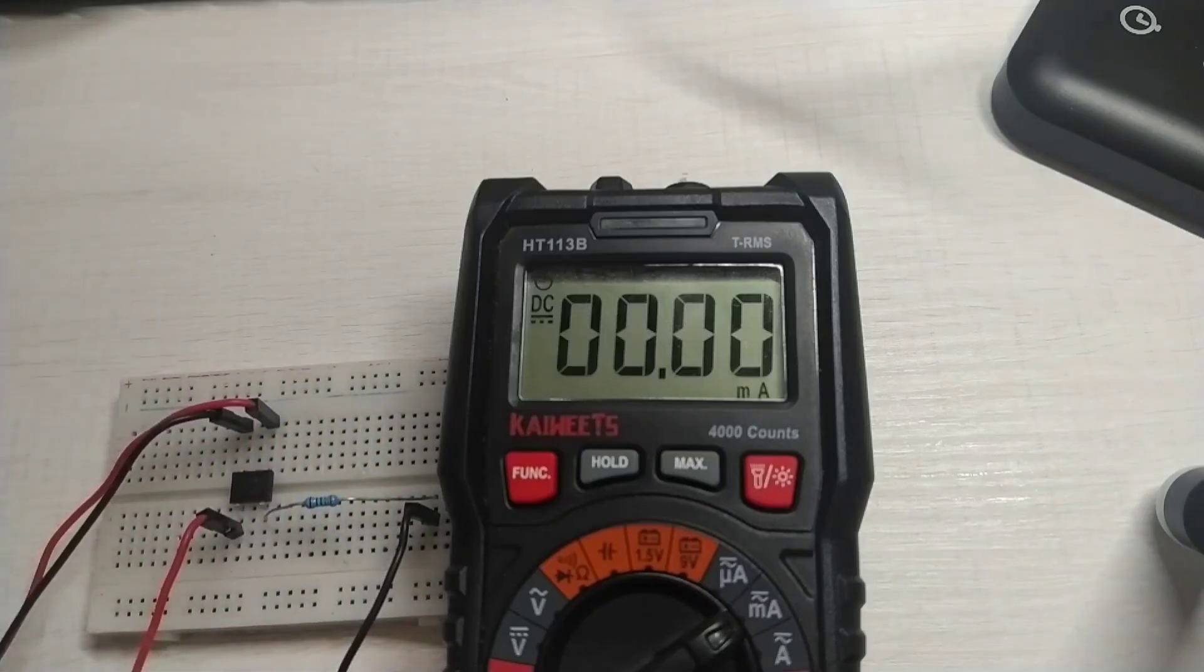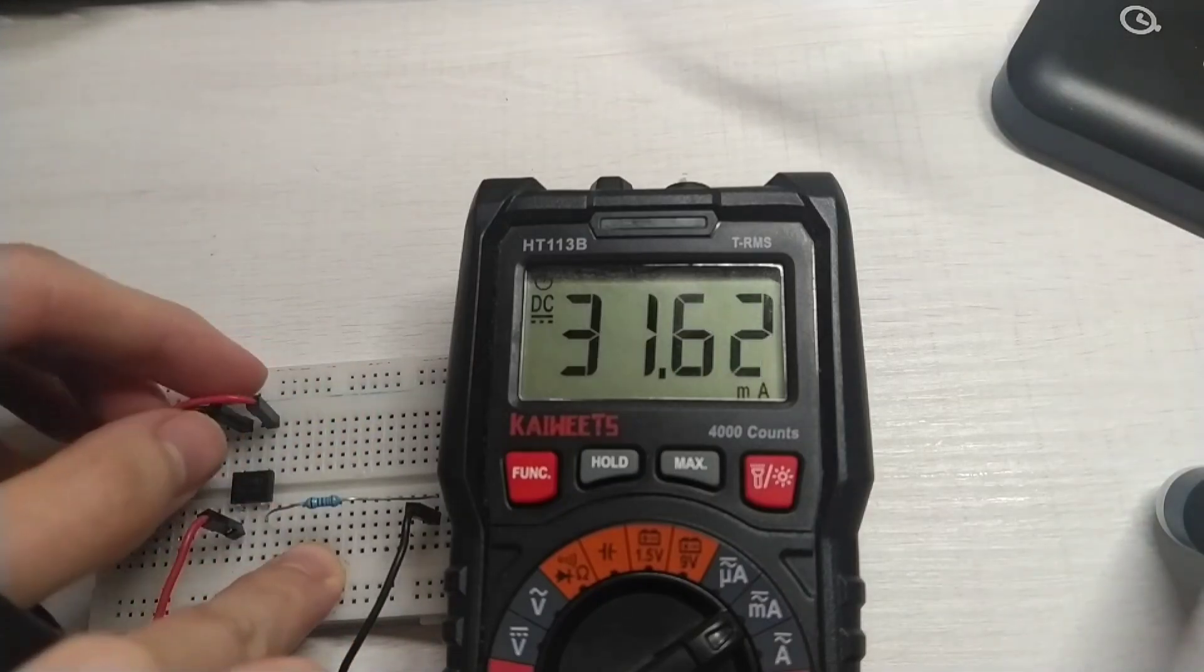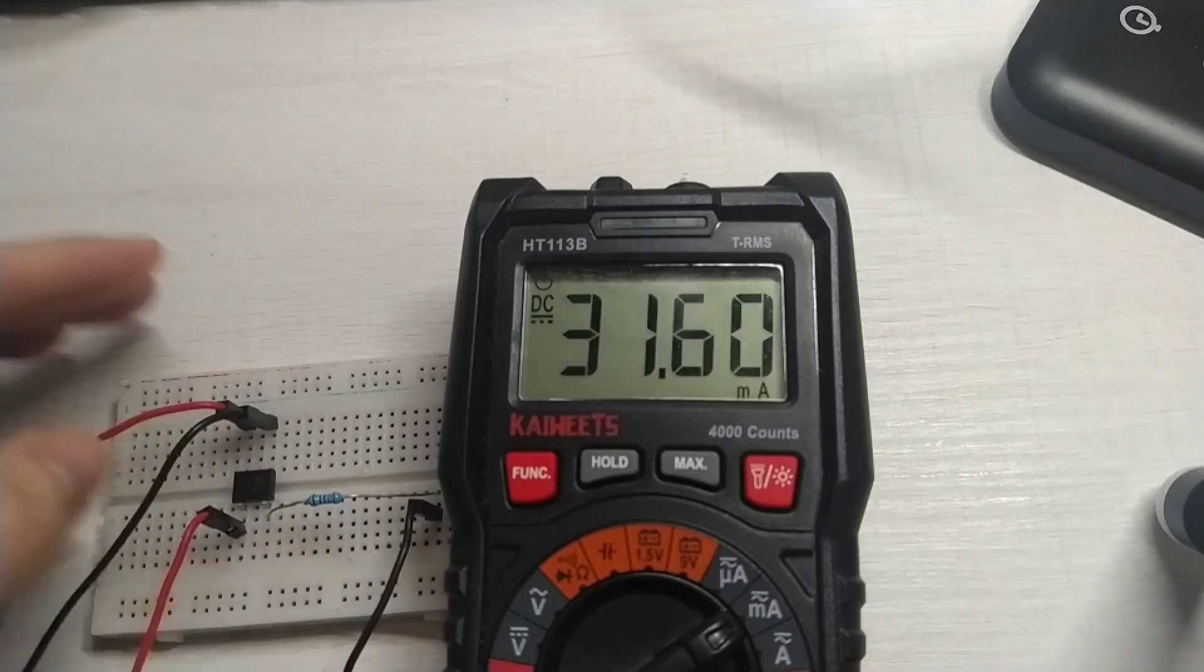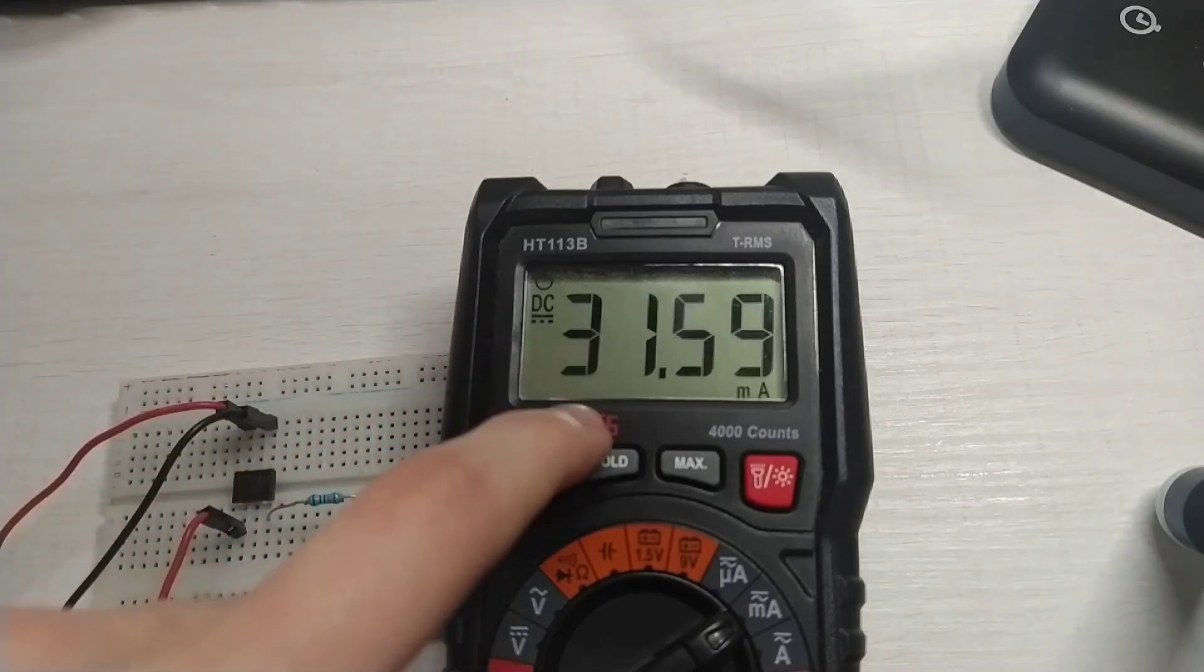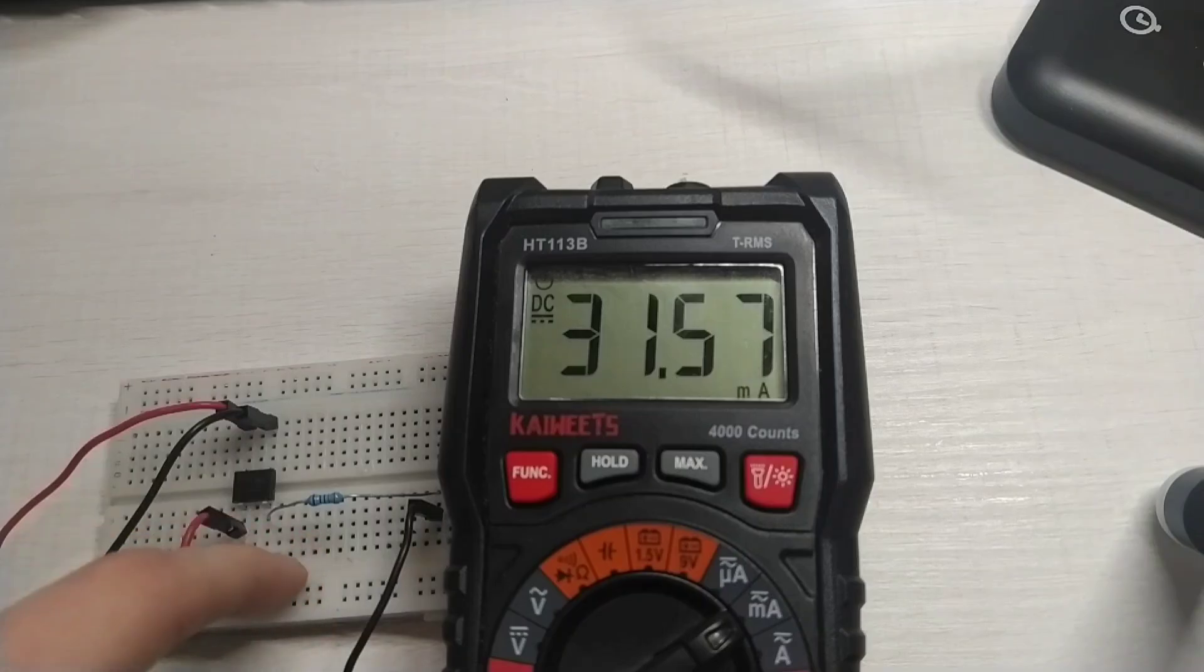Okay, now I'm gonna turn on the supply. We have 31mA. And now I'm gonna swap the two cables. As you can see, we have again 31mA because no matter how you swap the two cables, you will always end up with the same output polarity.